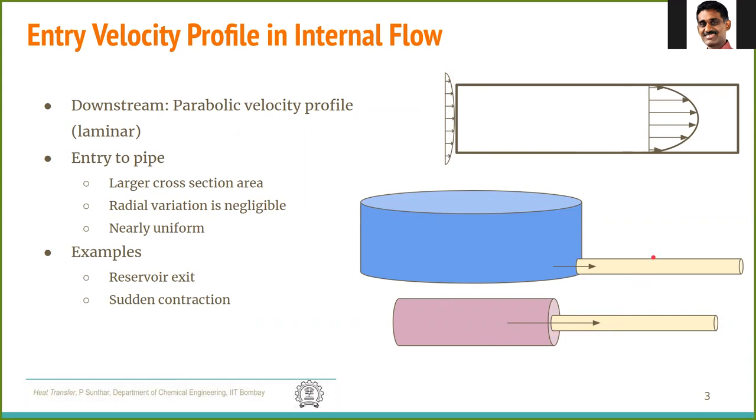Now, if the entry to this pipe comes from a larger section such as a reservoir or a sudden contraction, then in this large cross section, the variation of velocity along the radial direction is negligible. That means we can approximate the flow to be nearly uniform. So for theoretical purposes, a uniform velocity at inlet is considered as the boundary condition at the inlet.